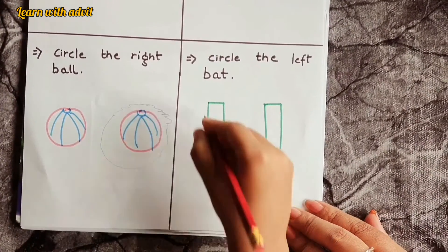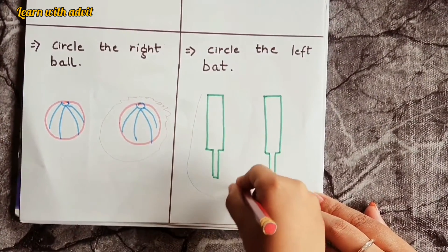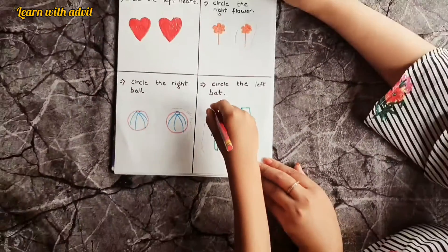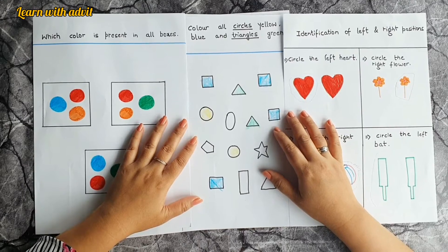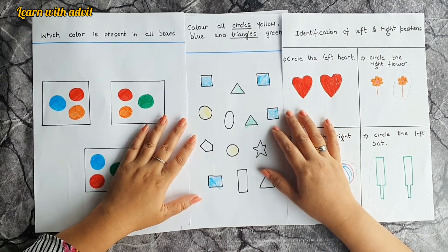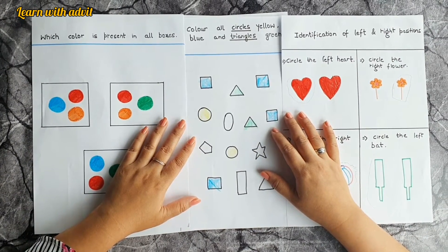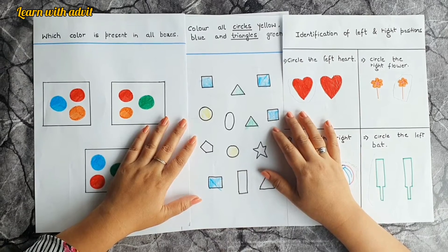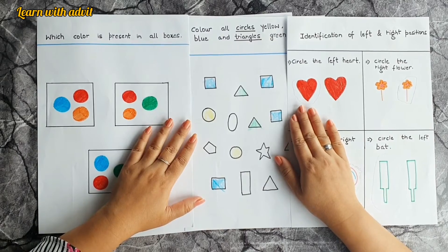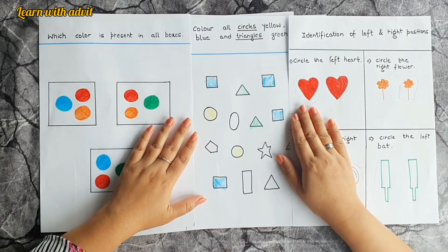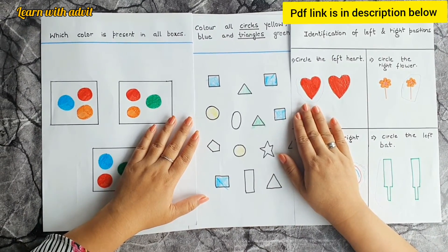I hope you like these worksheets. These worksheets are really good to enhance kids' memory power and their logical thinking. I will suggest please include these worksheets on your daily basis practice worksheet for the age group of three to six years. If you want to do these worksheets, I will provide a link in the description below.